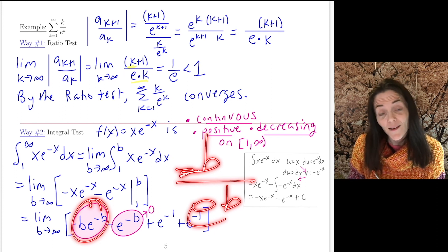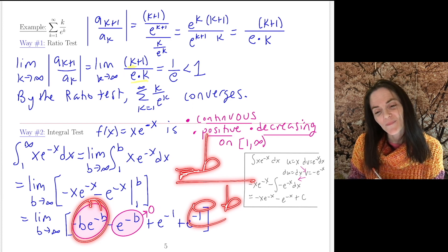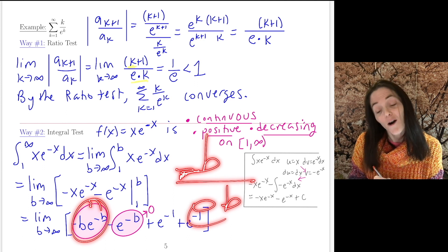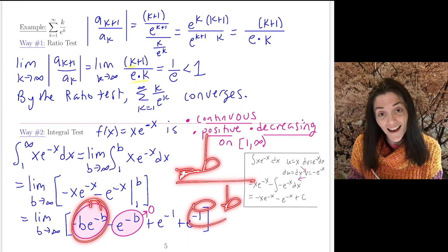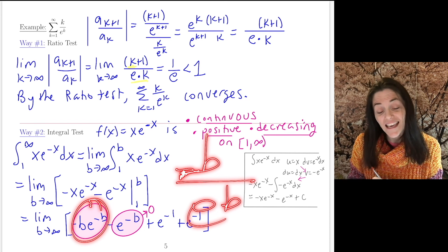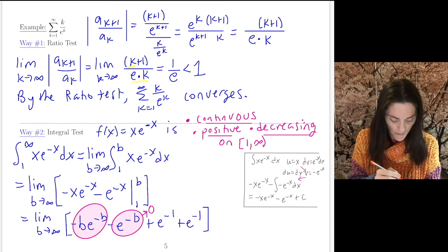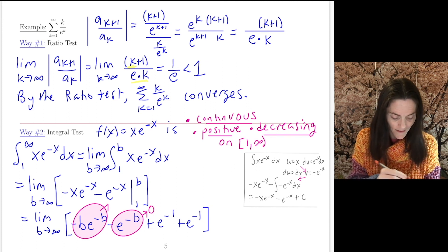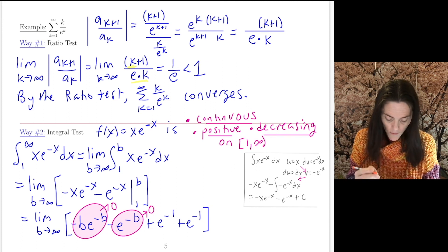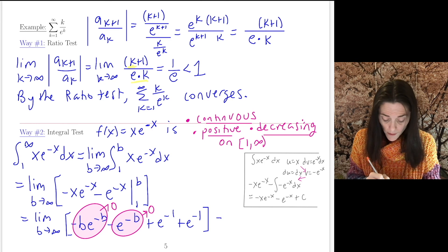You have power, just power of 1, over exponential. So without a doubt, -b·e^(-b) goes to 0 as b grows without bound. This also goes to 0. And so this improper integral is just 2 over e, which converges, right?